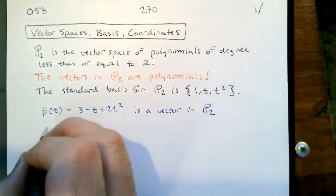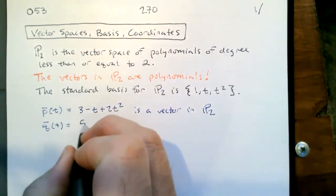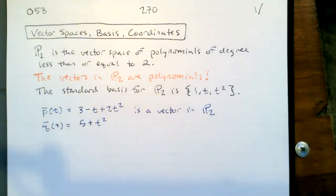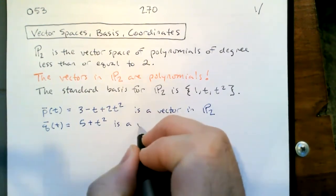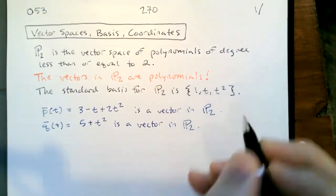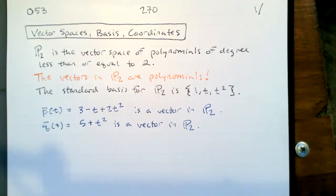This is a vector in P2 because everything in P2 looks like a polynomial of degree at most 2. So q(t) — I could write another one — say q(t) = 5 + t² is another vector in P2. So we're looking at these polynomials and thinking of them as vectors, because P2 is a vector space.